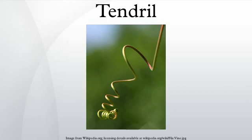The tendrils of aerial pitchers are usually coiled in the middle. If the tendril comes into contact with an object for long enough, it will usually curl around it, forming a strong anchor point for the pitcher. In this way, the tendrils help to support the growing stem of the plant.